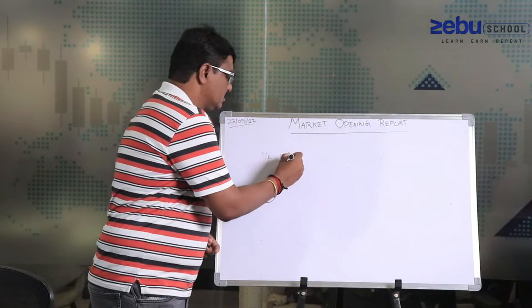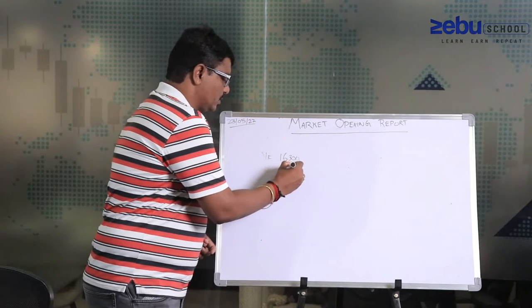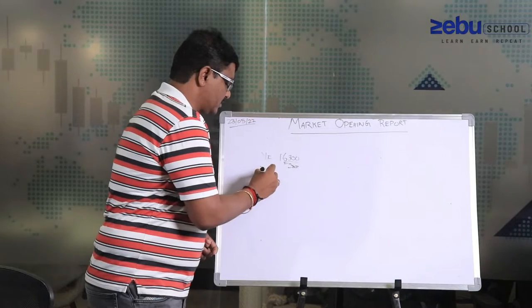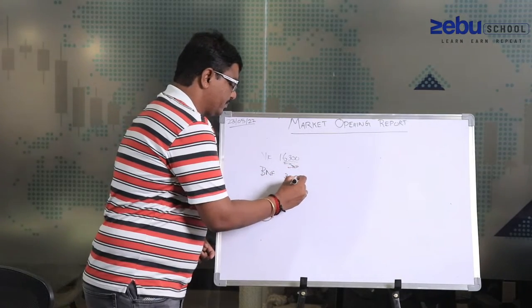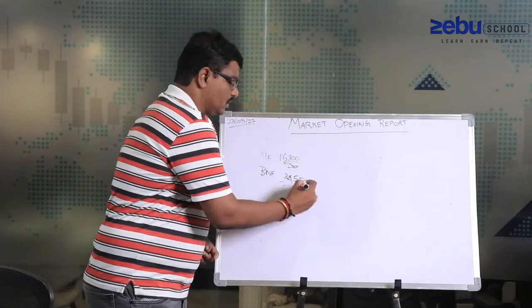Looking at where Nifty is, Nifty is at almost 16,300 level, 290 to 300 level, whereas Bank Nifty is somewhere around 34,550 level.